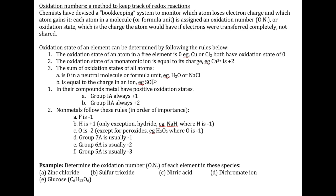If you have an ion, its oxidation number is just whatever the charge on the ion is. If you have an element, the oxidation number is just zero — copper has an oxidation number of zero, Cl2 has an oxidation number of zero. If you have a compound, the total oxidation number is zero, but you can figure out the oxidation number of individual elements by adding them up so they sum to zero.